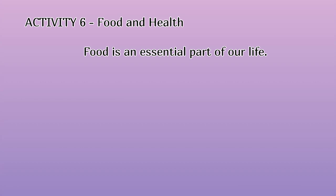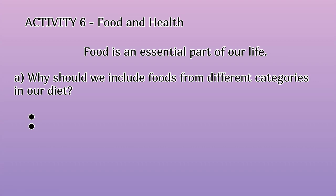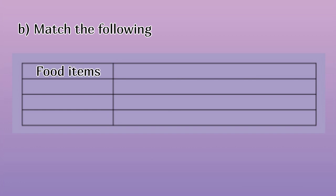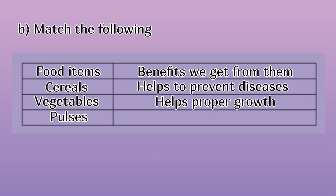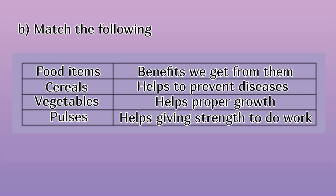Activity 6: Food and Health. Food is an essential part of our life. A: Why should we include foods from different categories in our diet? B: Match the following. Food items — Cereals, Vegetables, Pulses — with benefits: Helps to prevent diseases, Helps proper growth, Helps giving strength to do work.